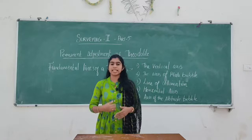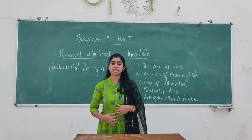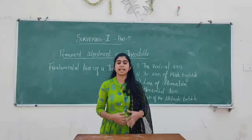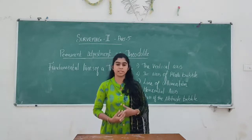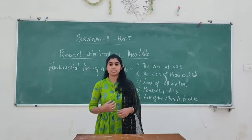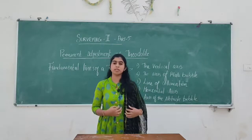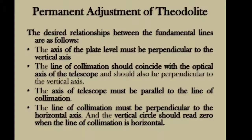So if we need to do a permanent adjustment, how do we do that adjustment? Let's see what are the desired relationships between fundamental lines. Number one: the axis of the plate level must be perpendicular to the vertical axis.